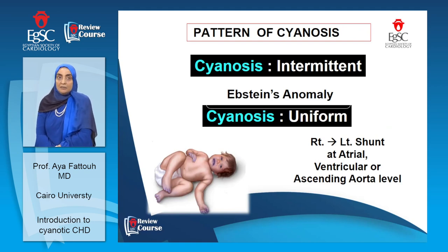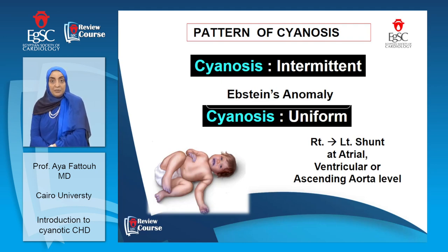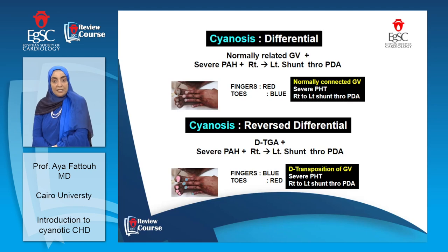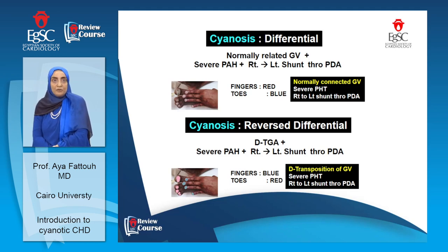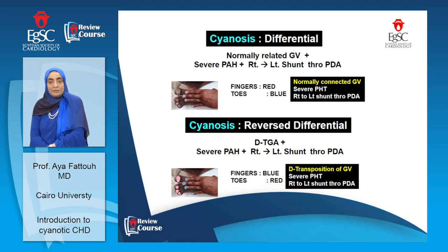The pattern of cyanosis is also informative. If we have intermittent cyanosis, this might happen in conditions like Ebstein anomaly. If it is uniform cyanosis, we are thinking about problems with right-to-left shunt at whatever level — either through ASD, VSD, or PDA. If it is differential cyanosis — meaning there is a difference in saturation between the upper and lower limb — this happens with severe pulmonary hypertension with normal great vessels, like persistent pulmonary hypertension of the newborn, or those with right-to-left shunt through the PDA. Sometimes there is reverse differential cyanosis with saturation in the lower limb higher than the upper limb, which may be faced in cases of transposition of the great arteries with severe pulmonary hypertension.